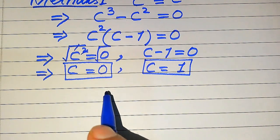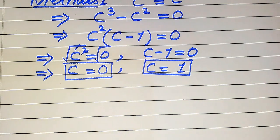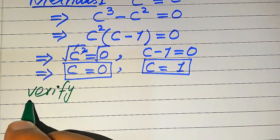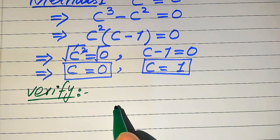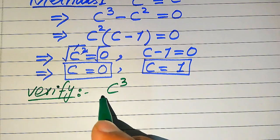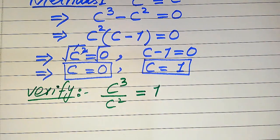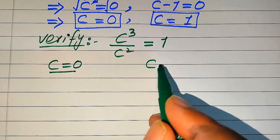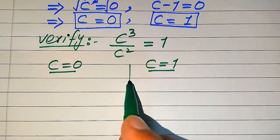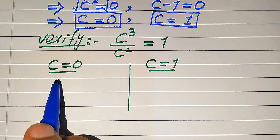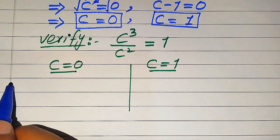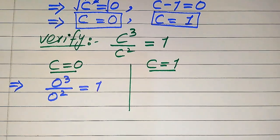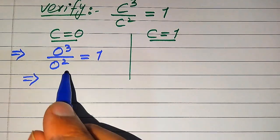So from the first method we get two roots: C equals 0 and C equals 1. Now we need to verify which of these roots are solutions and which are extraneous. For verification, we copy down the given equation: C cubed divided by C squared equals 1. We will verify C equals 0 on one side and C equals 1 on the other. Substituting C equals 0 into the left-hand side gives 0 cubed divided by 0 squared equals 1.